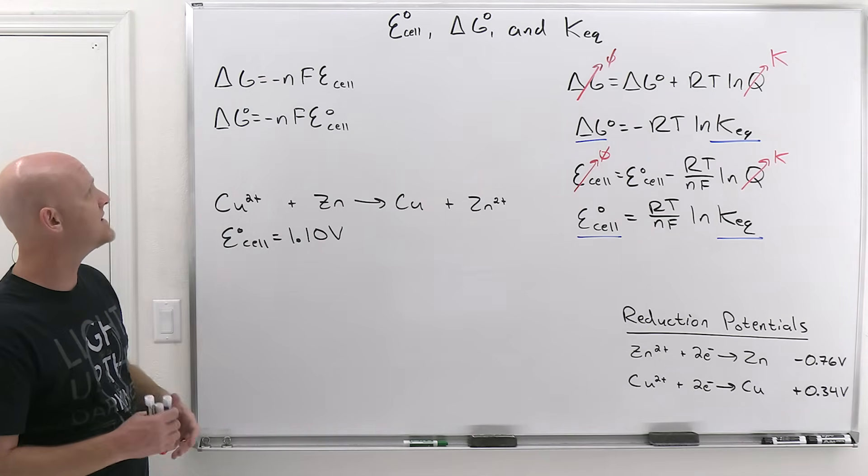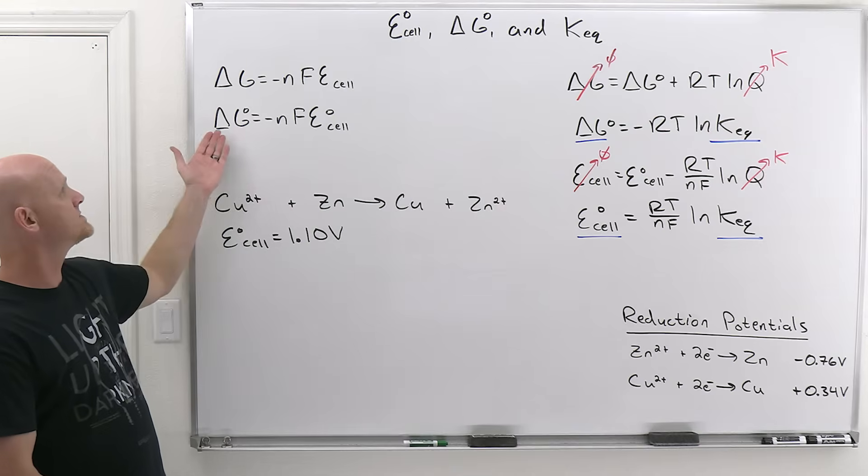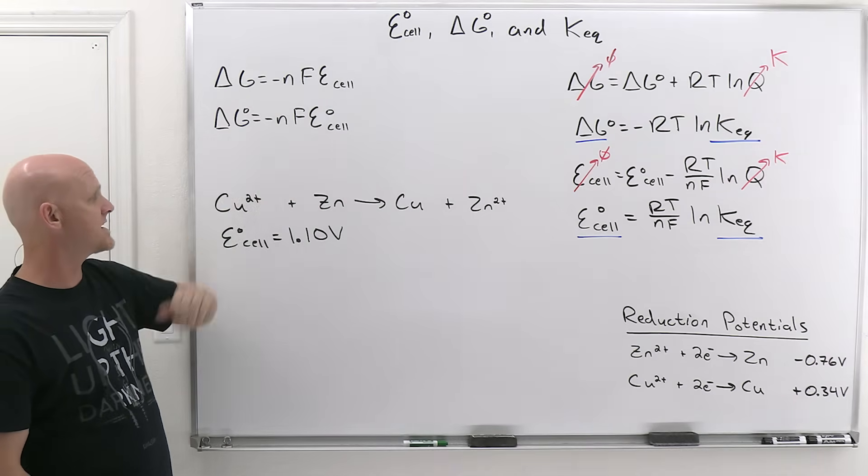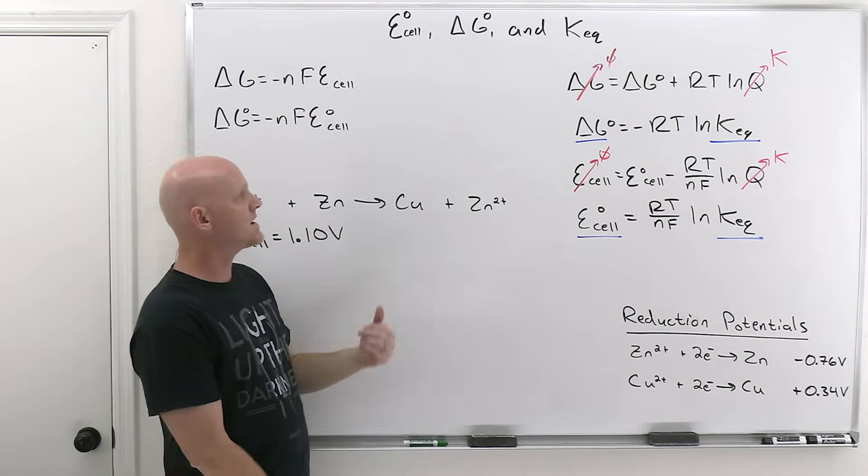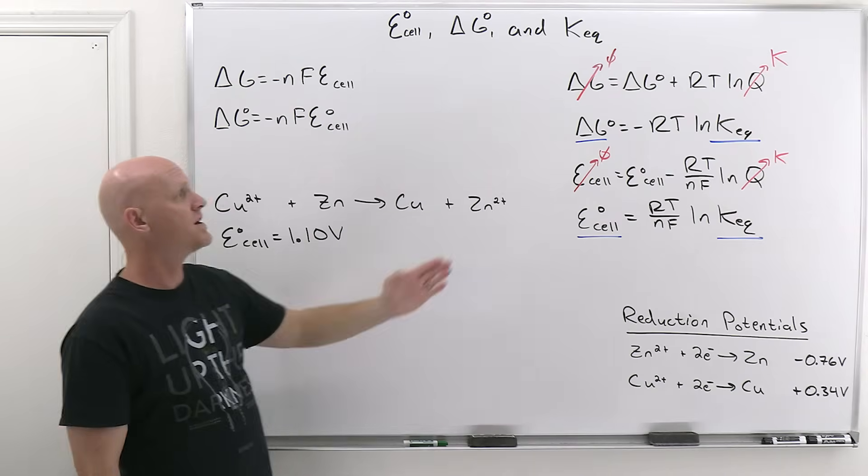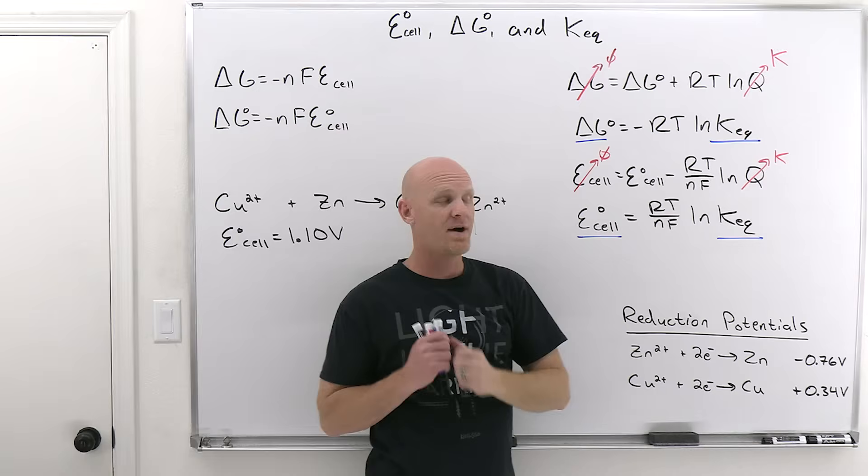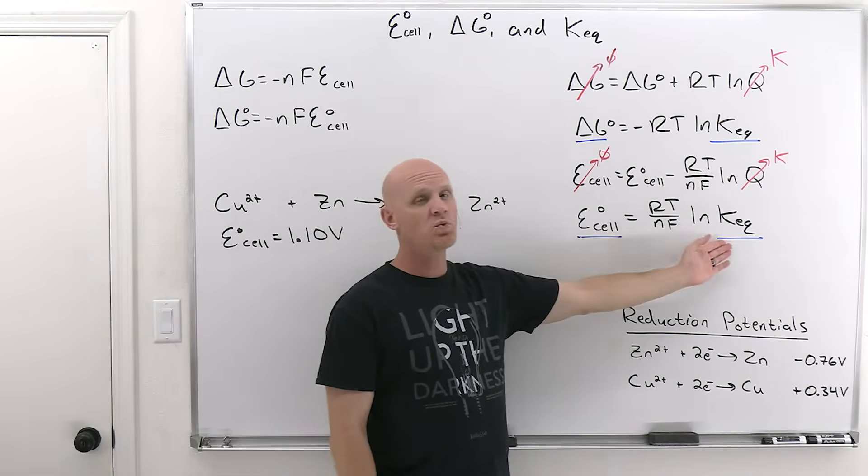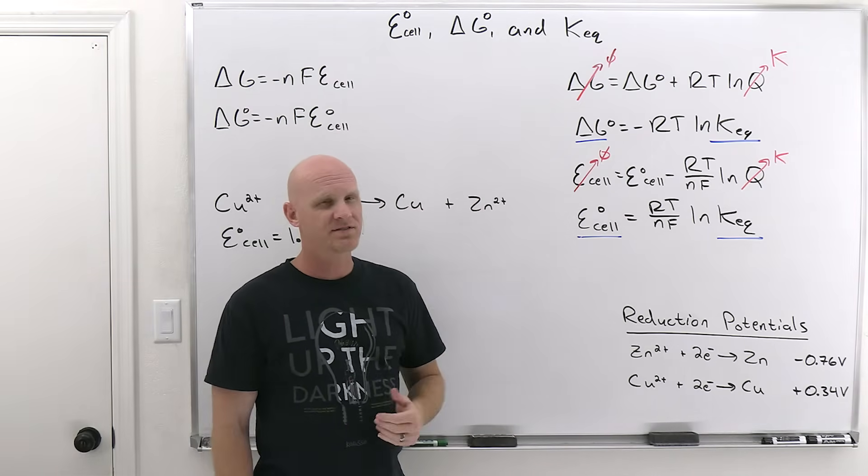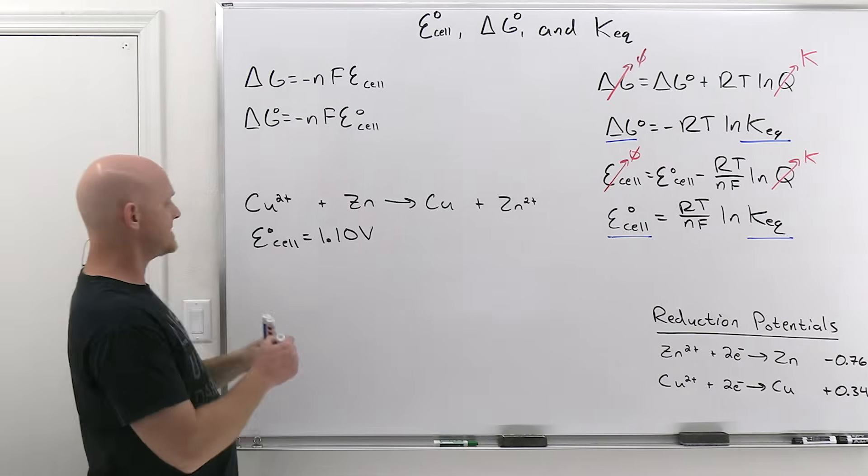Okay. So now we can find both delta G and K_eq. And we can use this one to get delta G standard from the standard value of E cell. And then we got a couple of different options. Once we get delta G standard, we could use this relationship to get the equilibrium constant. We've done that in the past, or we could use this one as well. And we'll do that way since it's new. So let's get delta G first.